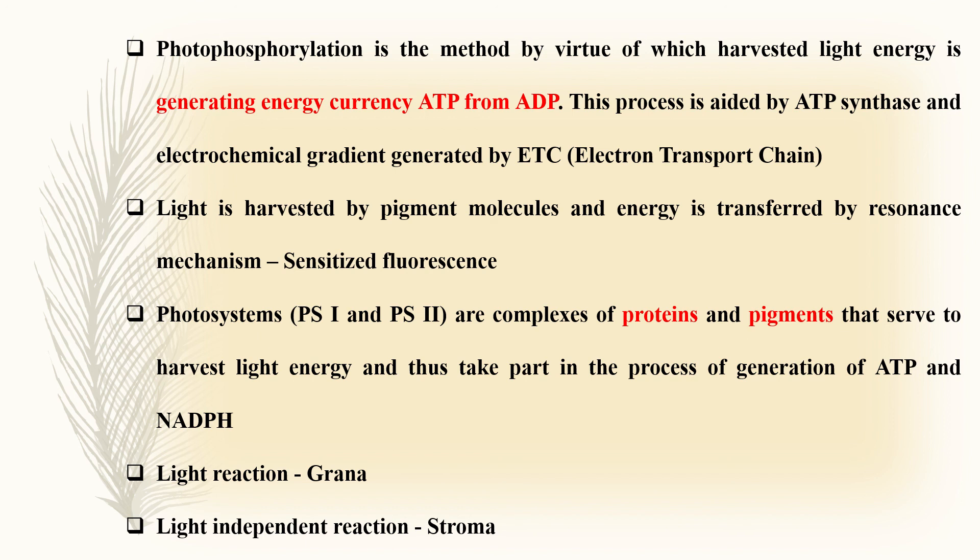Photophosphorylation is the method by virtue of which harvested light energy is generating energy currency ATP from ADP. This process is aided by ATP synthase and electrochemical gradient generated by electron transport chain.